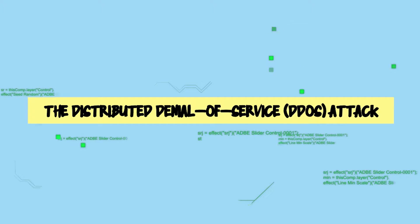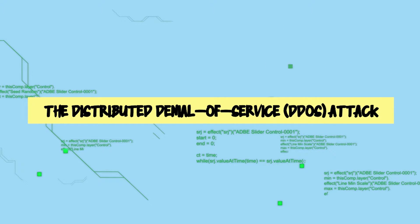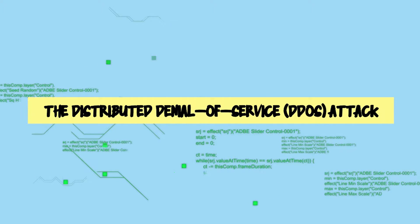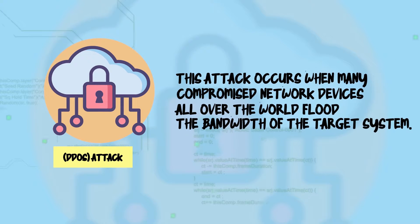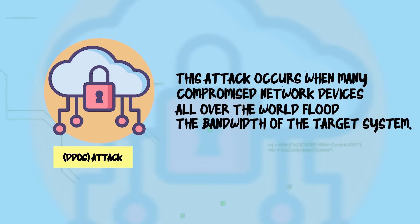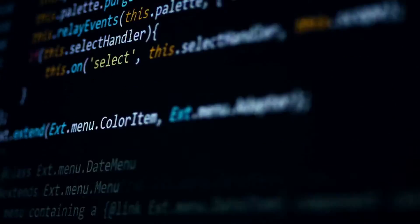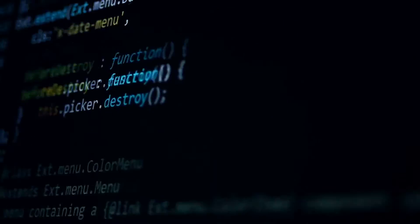At number 11, we have the distributed denial of service, or DDoS, attack. This attack occurs when many compromised network devices all over the world flood the bandwidth of the target system. DOS and DDoS attacks can occur through session hijacking, TCP SYN flood attack, teardrop attack, smurf attack, ping of death attack, and botnets.